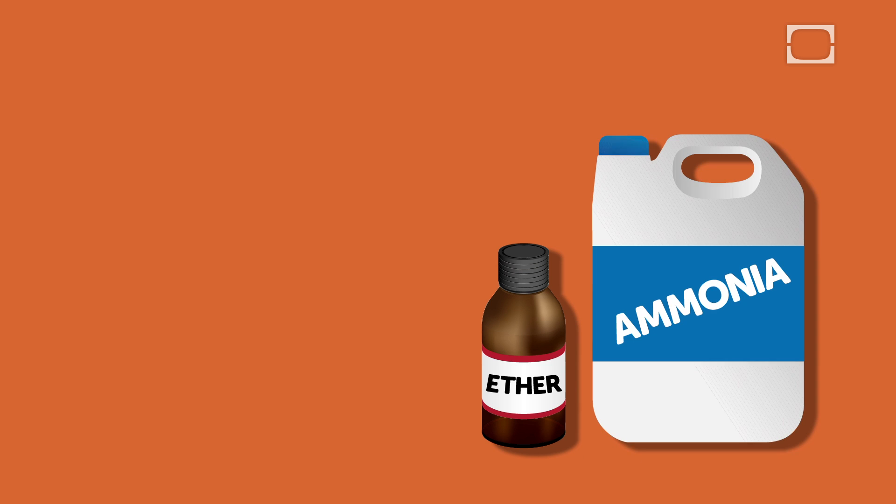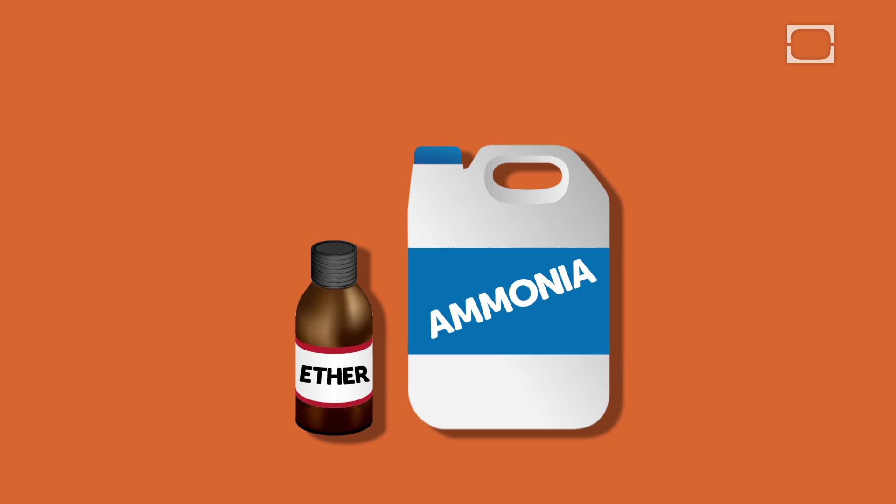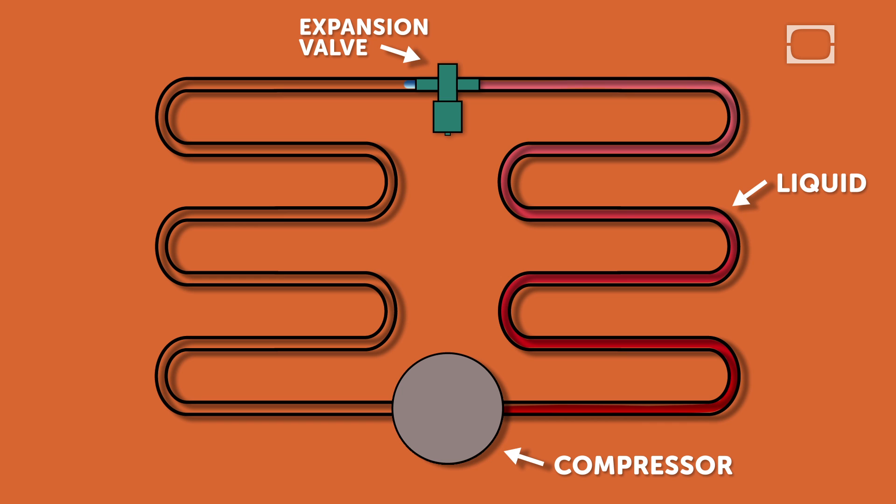His design worked off the principles that, as fluids, these substances absorbed heat and lowered the temperatures of nearby objects. By using a compressor to exert pressure on the substances, Perkins' refrigerator controlled when the ether or ammonia changed from a gas to a liquid. As it moved through the refrigerator's coils, the substance absorbed heat and vaporized once more before returning to the compressor for reuse.